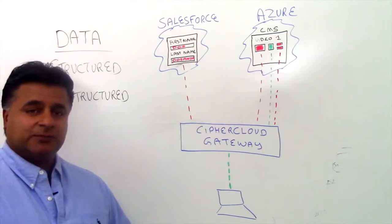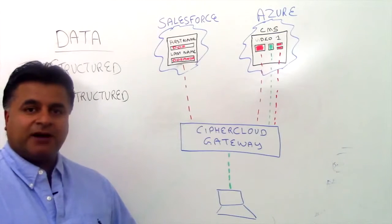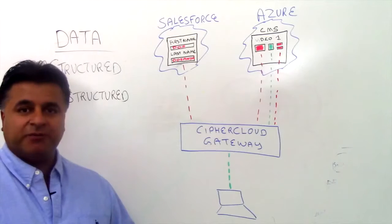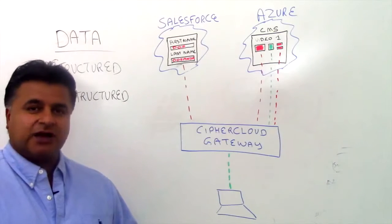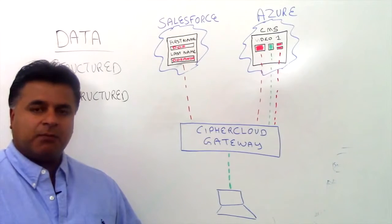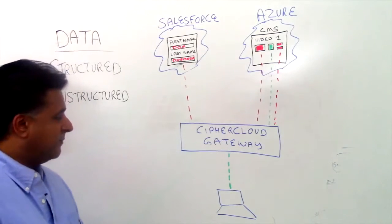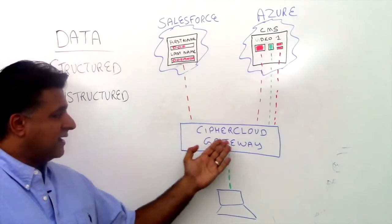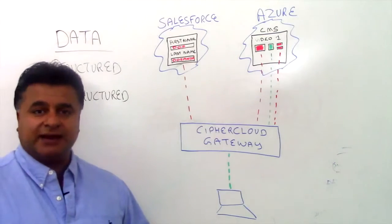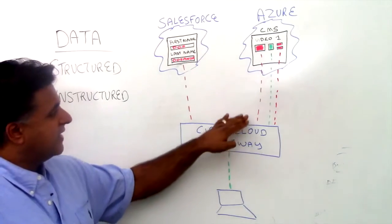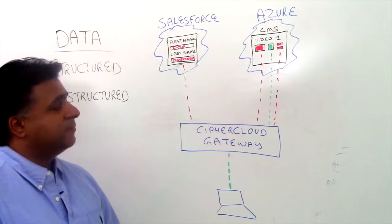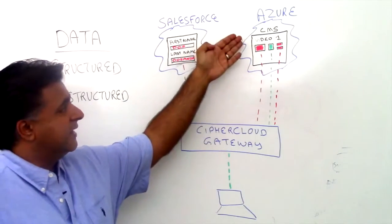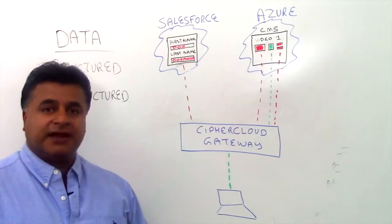In addition to structured data, we also support unstructured data. When we talk about unstructured data in the Cypher Cloud context, we talk about files — any type of files. They could be rich media files such as graphic files, documents, PDF, Excel spreadsheets, and also video files. A person at their desktop or workstation uploads a video file, the Cypher Cloud gateway applies the policy associated with that file, encrypts it, and sends it into the cloud. In this example, we have a client that uses the Microsoft Azure Cloud with a content management system where the video files are encrypted and stored within that application.